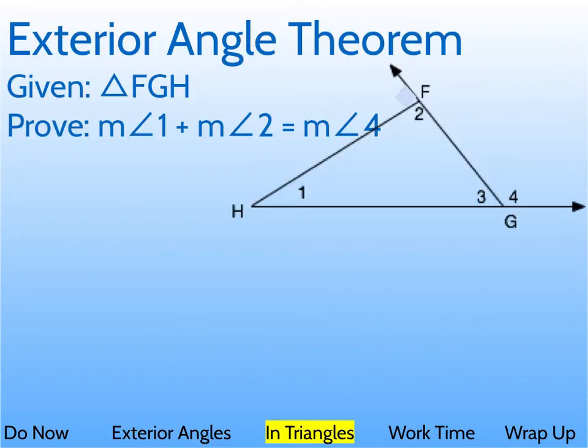Okay, so here we're going to look at the exterior angle theorem in triangles specifically, and what we're trying to prove is that angle 1 plus angle 2 add up to equal angle 4, and this is true of all triangles.